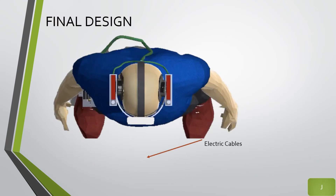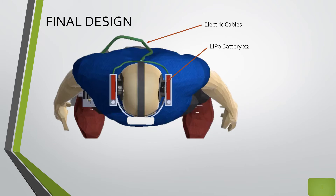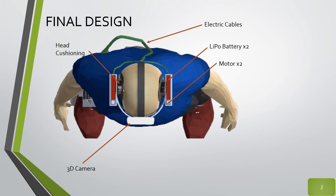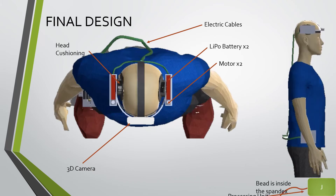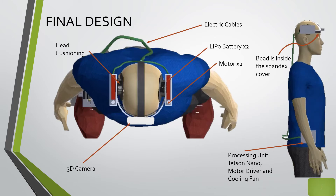The green wires are the electric cables connecting the processing unit to the headset. The red boxes are the lipo batteries, the gray cylinders are the motors, and the camera is on the front, with head cushioning so it fits snugly. From the side view, the bead is inside a spandex cover — the black line that goes across the forehead. The processing unit at the bottom contains the Jetson Nano, the motor driver, and a cooling fan that faces outward to dissipate heat.